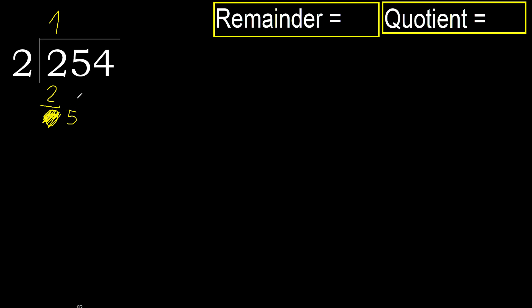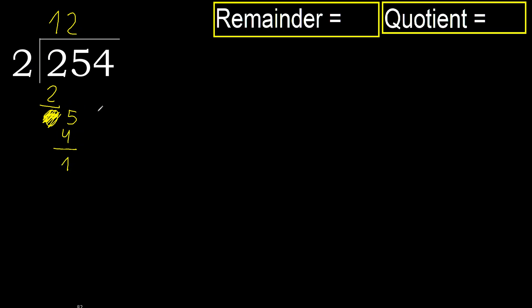Here, 5. 2 multiplied by 3 is 6 — 6 is greater. 2 multiplied by 2 is 4, which is not greater. Subtract. Next.